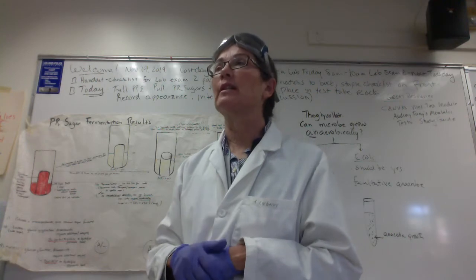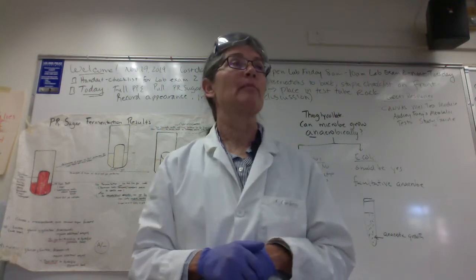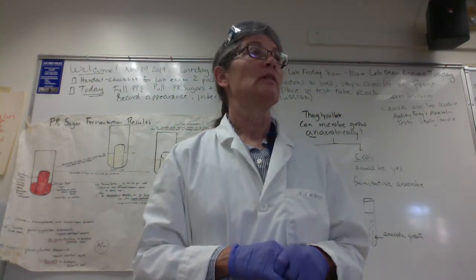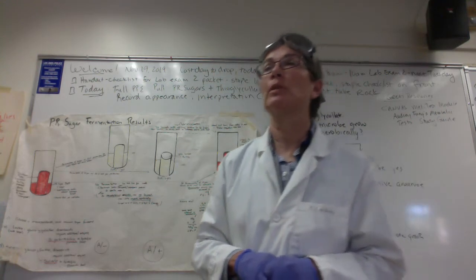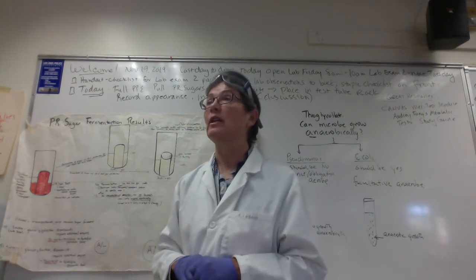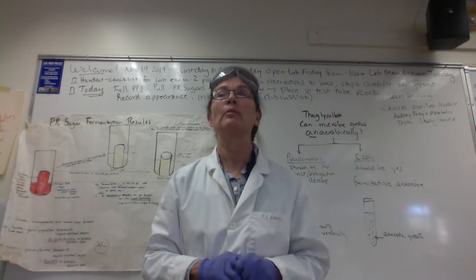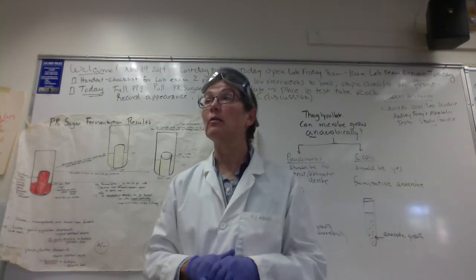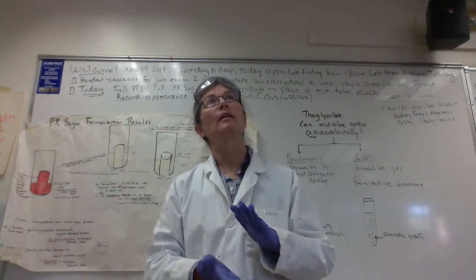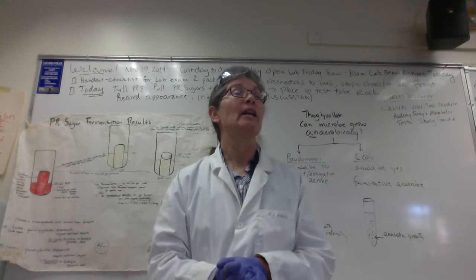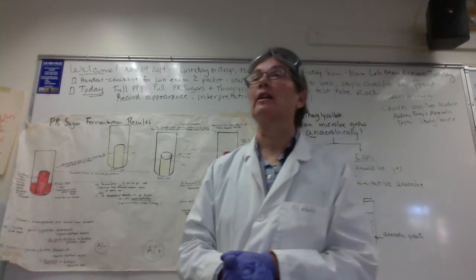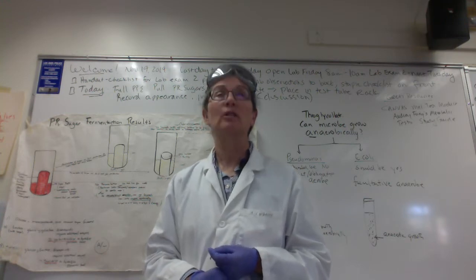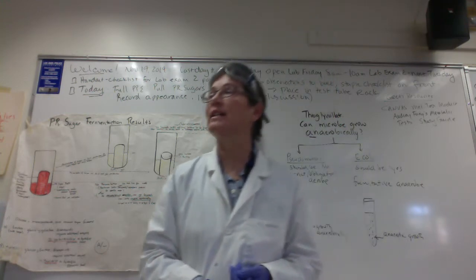Let's think about a microbe that can't ferment the sugar — they lack the enzyme, maybe they lack the transport proteins or the enzymes to carry out fermentation. They're going to starve. So what's another carbon and energy source in the PR sugar medium? The amino acids and proteins. When a microbe tears apart an amino acid, ammonia is released through deamination. Ammonia acts as a weak base, so if your microbe can't use the sugar and has to use amino acids, the pH becomes alkaline and the phenol red will be red.